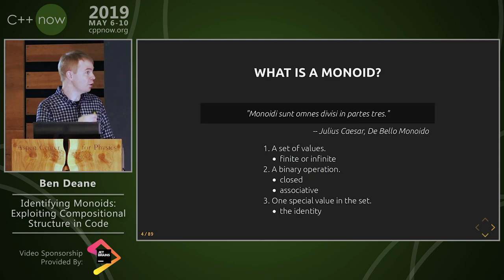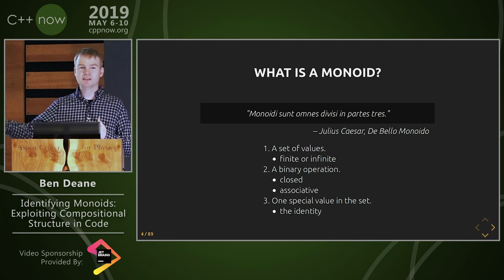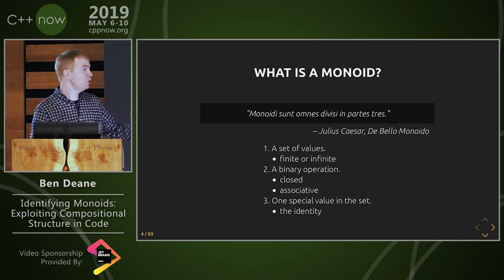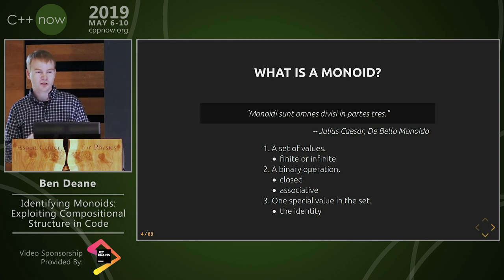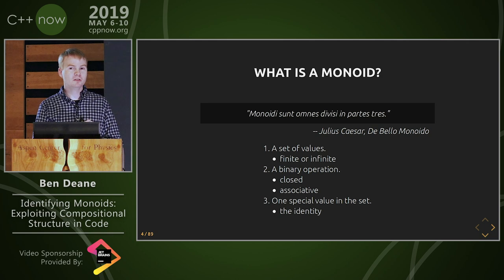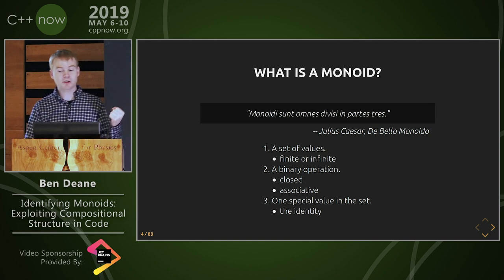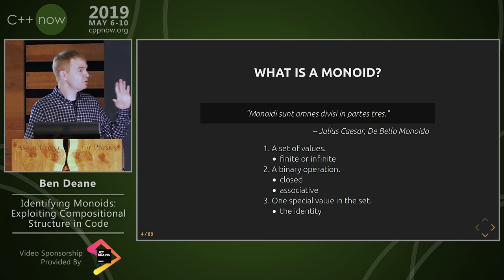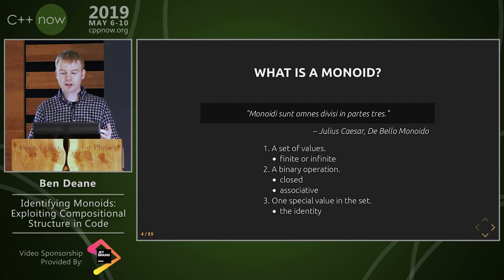Just to give you context before I show the examples: a monoid is basically three things. You've got a set of values — and that set in computer science usually is finite, but it might be a finite approximation to a conceptually infinite set in mathematics. You've got a binary operation which is closed over the set, so when you put two elements in, you get the thing of the same type out. That operation has to be associative — notably, it doesn't have to be commutative, that's kind of an optional add-on. And there's one special value in the set which is the identity.